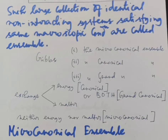Statistical mechanics provides a number of methods for calculating equilibrium thermodynamic properties of macroscopic systems. Explicit calculations of thermodynamic functions can be carried out using microcanonical, canonical, or grand canonical ensembles. A specific choice of ensemble may be thought of as corresponding to a particular physical situation.